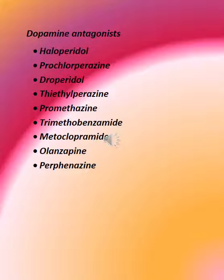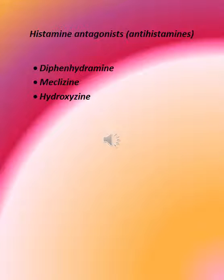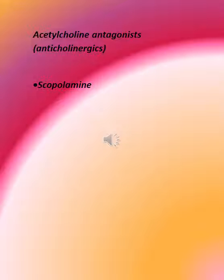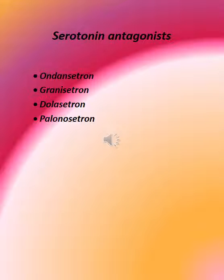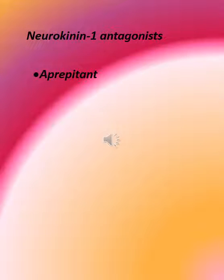Dopamine antagonists include: haloperidol, prochlorperazine, droperidol, thiethylperazine, promethazine, trimethobenzamide, metoclopramide, olanzapine, and perphenazine. Antihistamines include: diphenhydramine, meclizine, and hydroxyzine. Anticholinergics include scopolamine. Serotonin antagonists include: ondansetron, granisetron, dolasetron, and palonosetron. Neurokinin-1 antagonists include aprepitant.